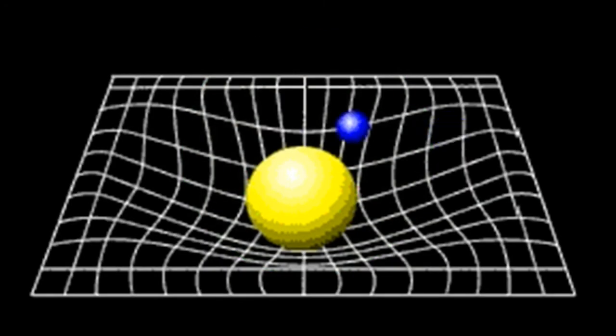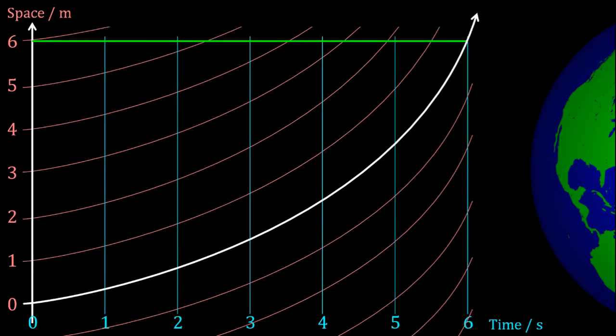On a sphere, a straight line, the shortest distance between two points, is a section of a great circle which is actually curved. Similarly, the curved orbits followed by objects in gravitational fields are equivalent to straight lines in the curved geometry of spacetime. Remember the straight line on the graph still produced acceleration.